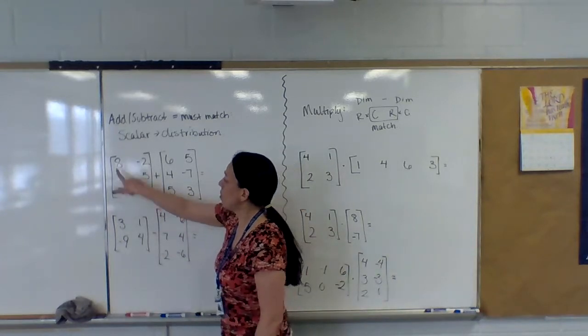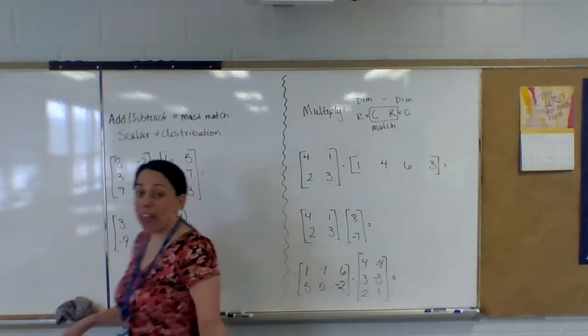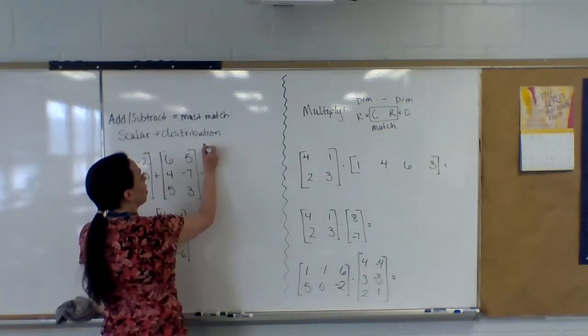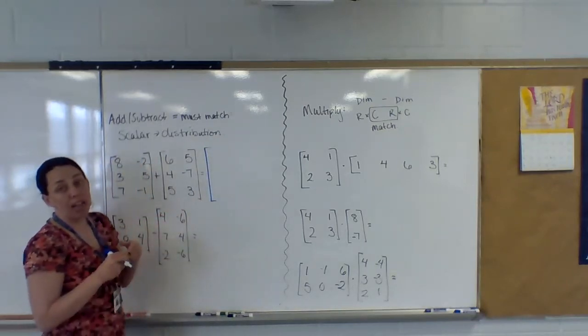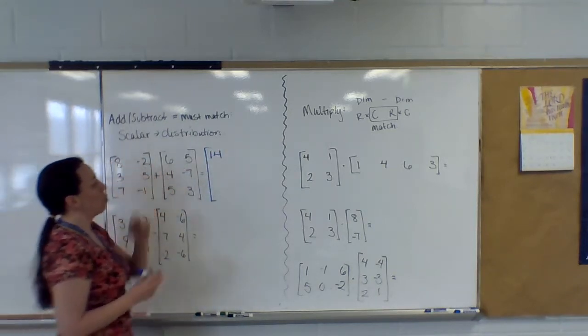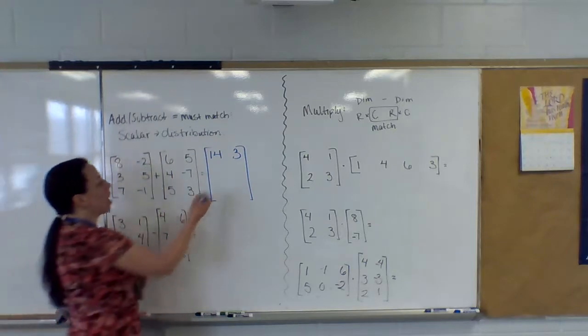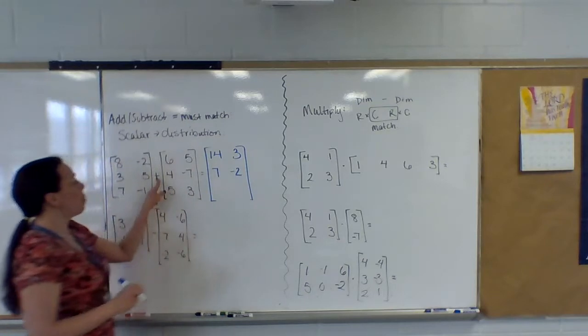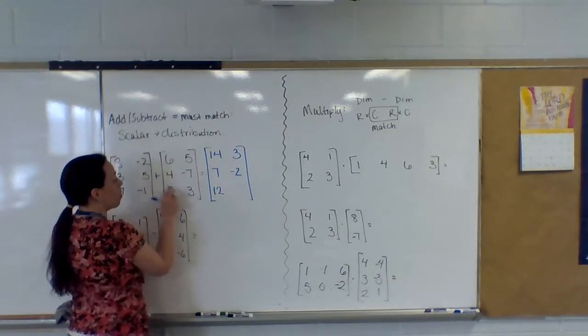So right here I have three rows, two columns, three rows, two columns. I can add these and you add them very simply just by adding what's in each position. Eight plus six gives me 14. Negative two plus five gives me three. Three plus four is seven, five plus negative seven. So be careful, I'm adding but that second one was negative. Seven plus five and negative one plus three.